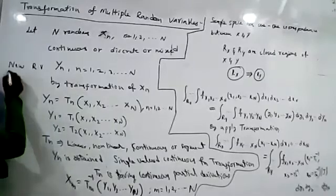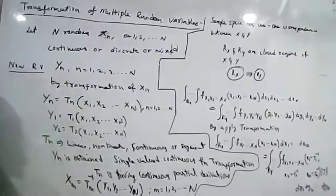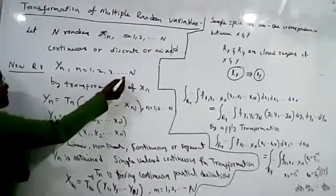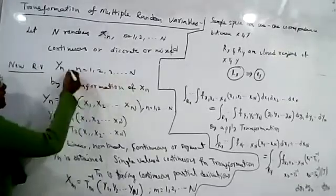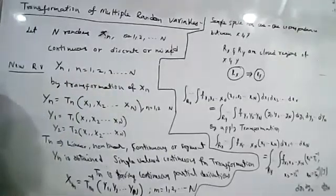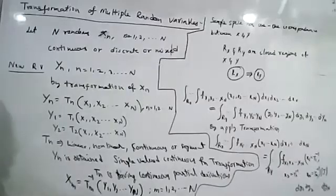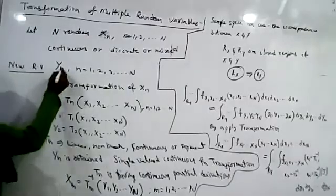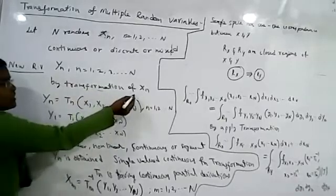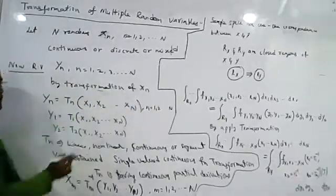We are defining a new set of random variables y_n, where n is varying from 1 to N — that is, N number of new random variables. These are defined by applying a transformation to the random variables x_n. So y_n is obtained by applying transformation to x_n.